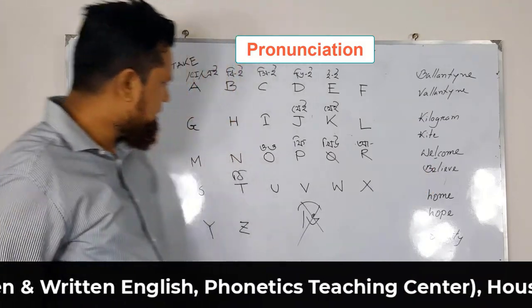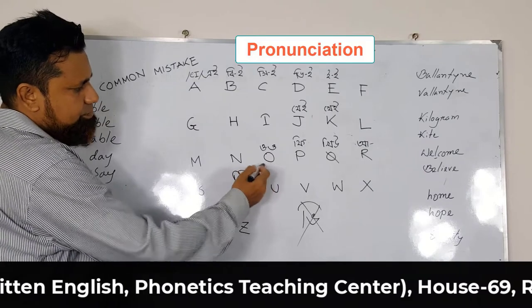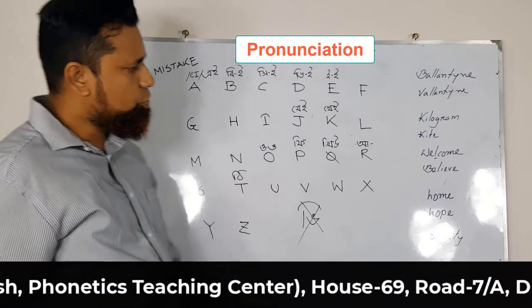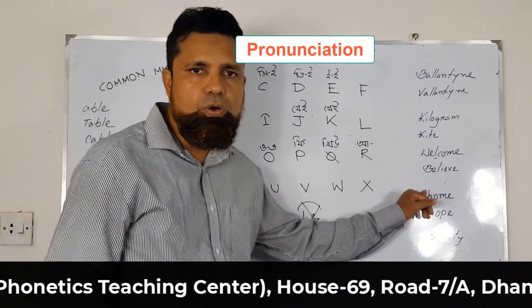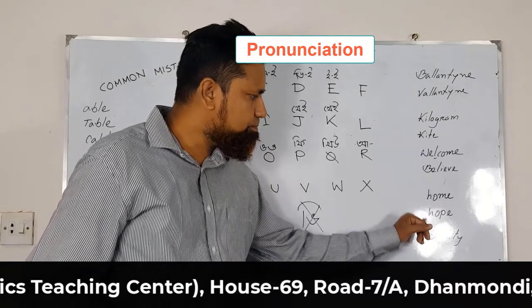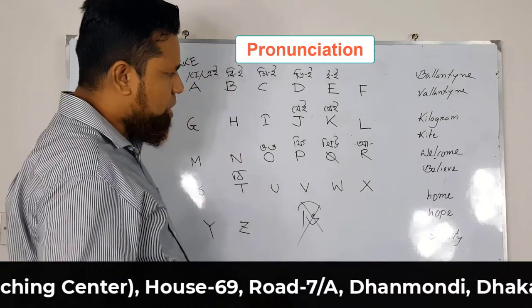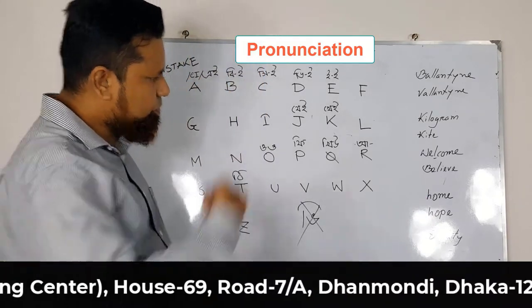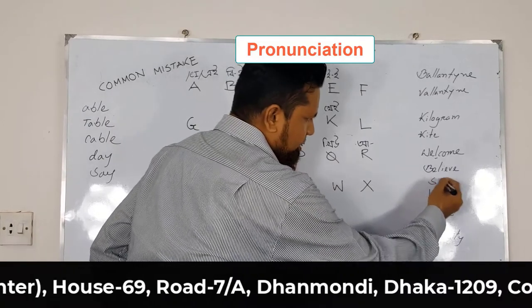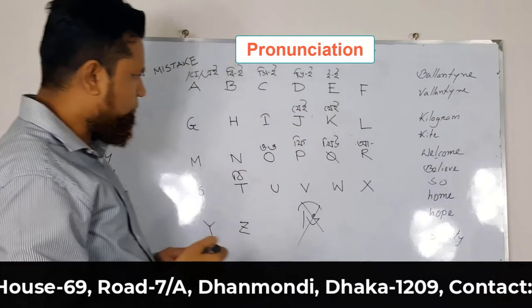We have a problem in pronouncing this O. It should be 'home' — not 'home'. Home. So — not 'so', it should be 'so'.